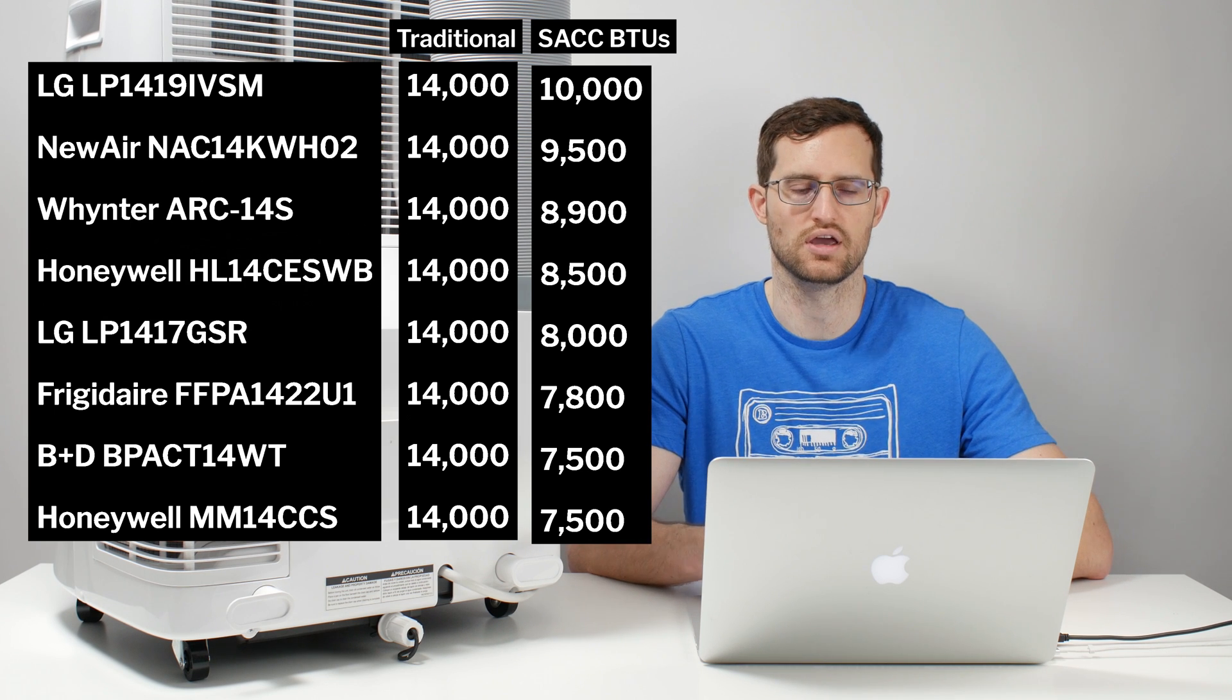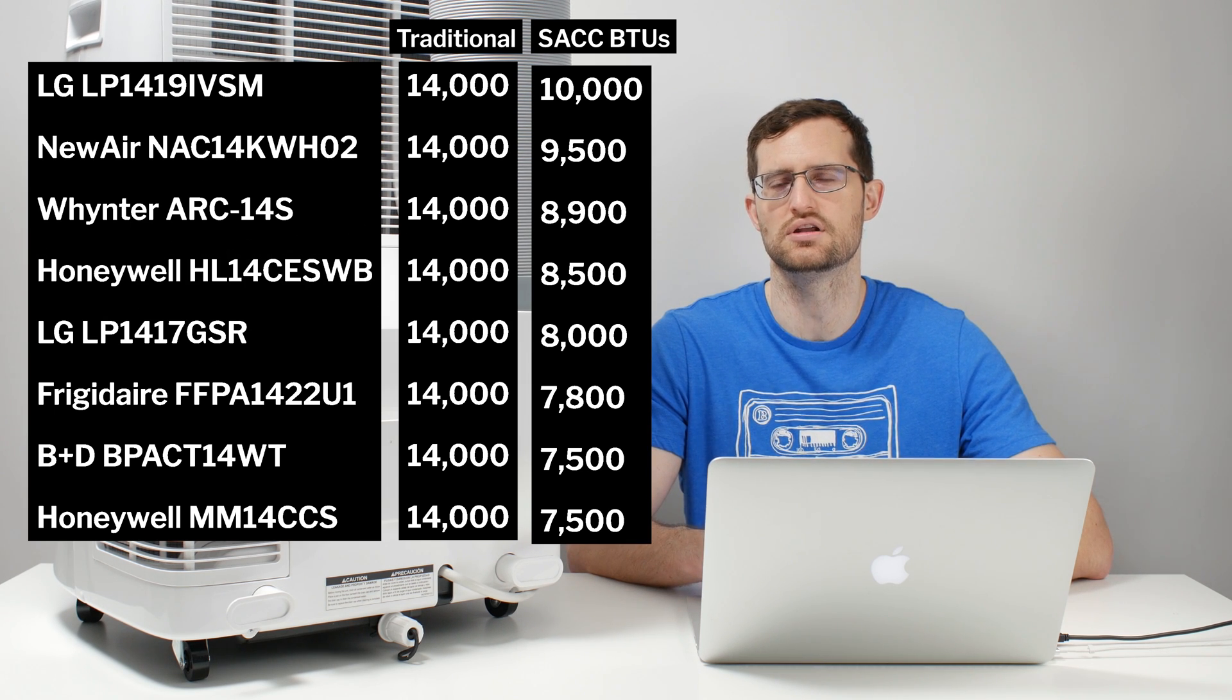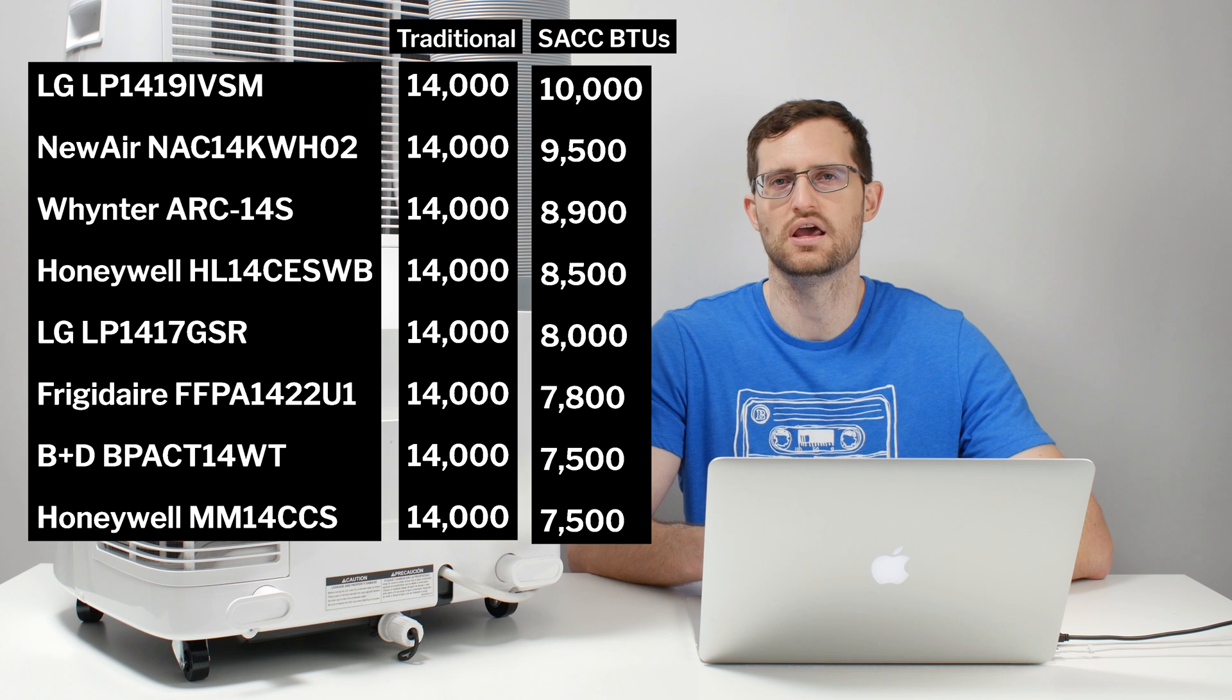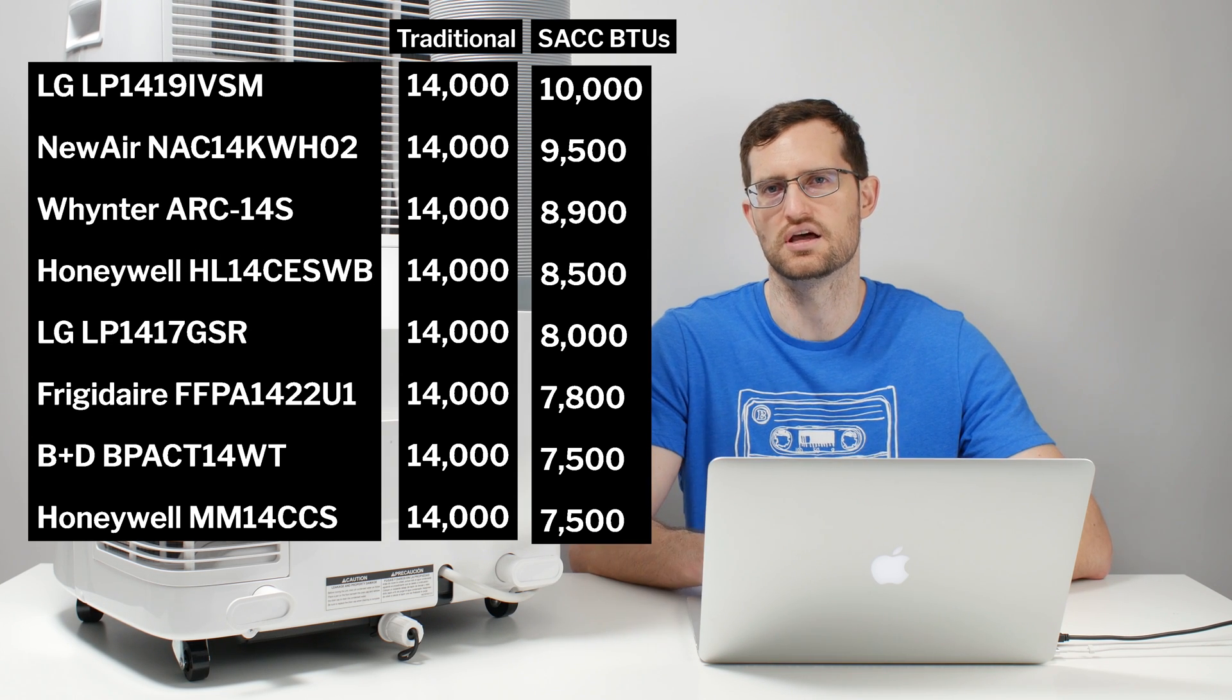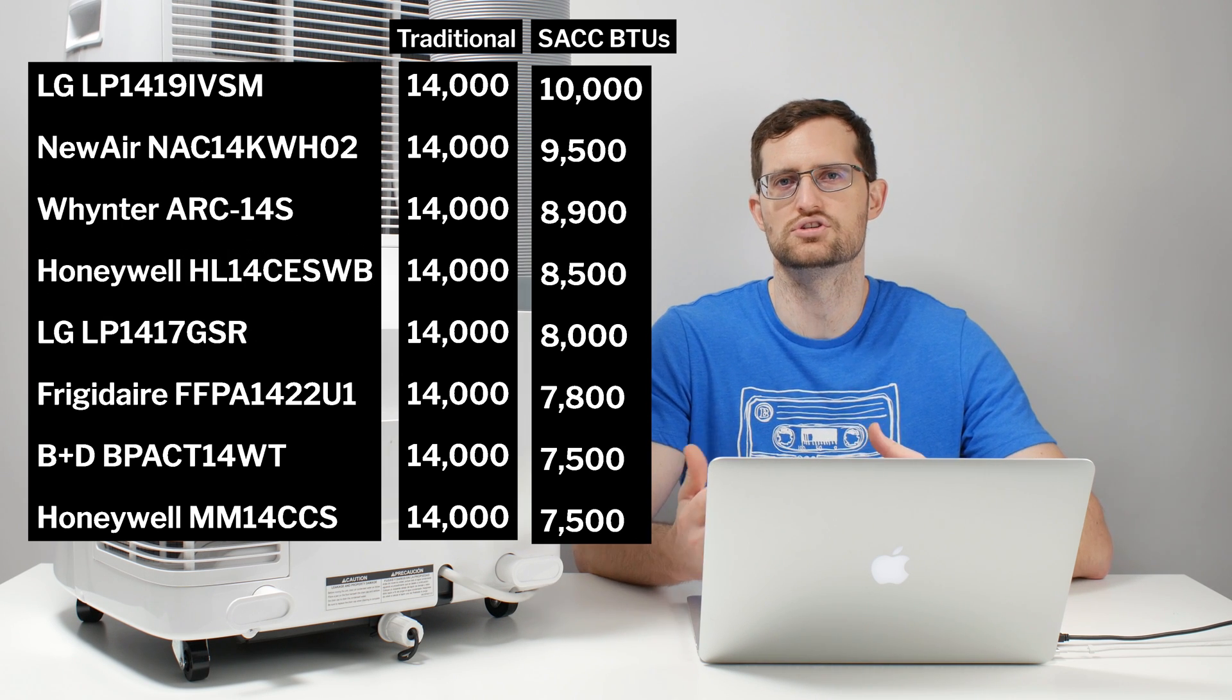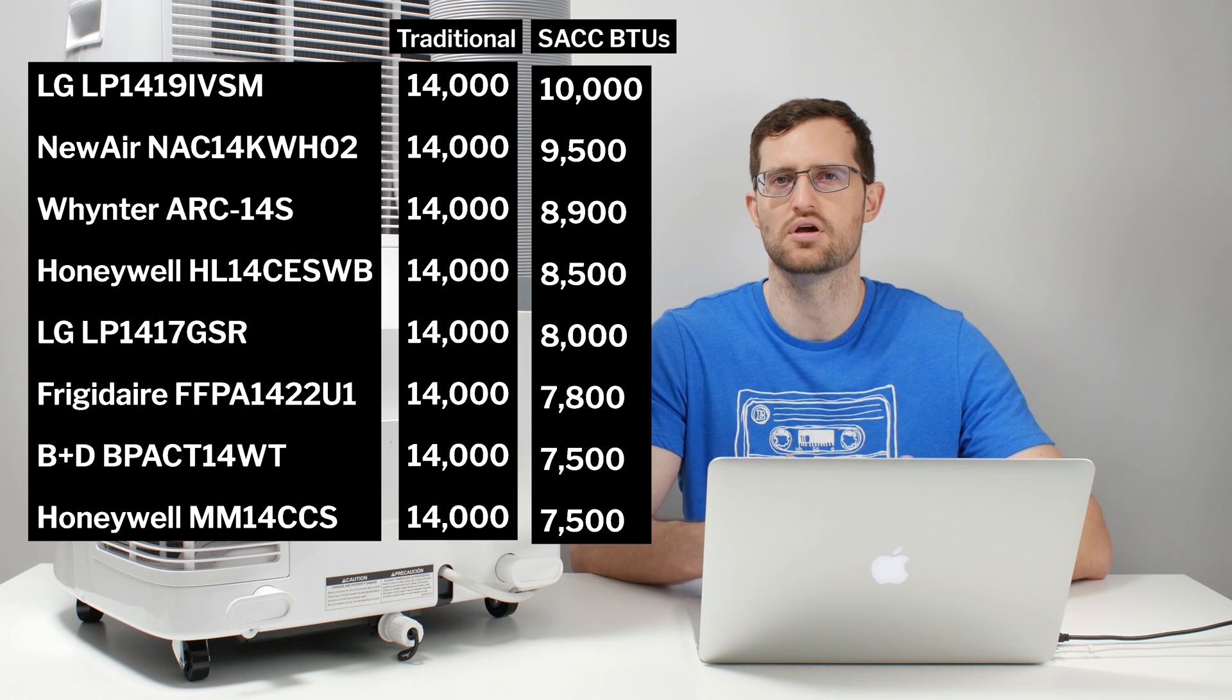So you would think, okay, this is a 14,000 BTU unit. It covers this much square feet and therefore it is just as good at cooling as this other 14,000 BTU unit. And you would really just go with the unit that was the cheapest, or maybe a particular unit would have better reviews based on its noise output or its size or any other factors, but it would never be cooling capacity that would distinguish one model from another.